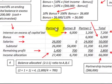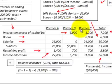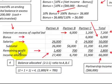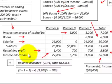We're going to have three partners: Partner A, Partner B, and Partner C. We're going to be calculating the interest on the excess of the capital balance for the partners, a bonus calculation, salary distribution, how any remaining profit is allocated and distributed between the partners, and of course our total income allocation for each partner.